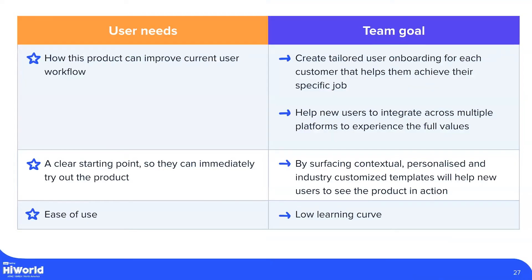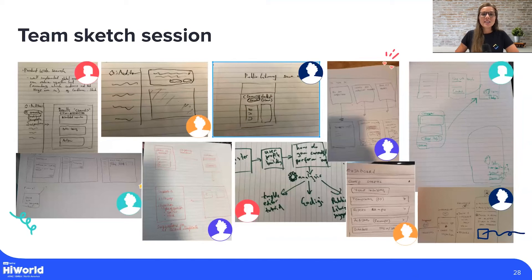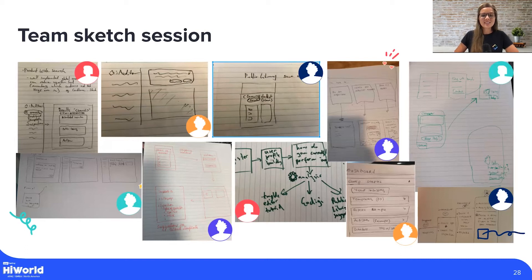As a team, we get together to brainstorm how to address user needs by turning them into team goals. For example: to show users how this product can improve their current workflow, we have to create a tailored user experience for each customer that helps them achieve their specific jobs. Once we have a clear team goal, it's time for a sketch session — a quick and fun way to generate as many ideas as possible of small improvements that are just enough to learn and iterate. We use pen and paper to sketch out ideas, share them with each other, and then I collect those sketches and include parts of them into wireframes, which I test with users to see if anything needs refining. This is also a great way to get to know your team and their creative side — as we all know, there is a designer in everyone.